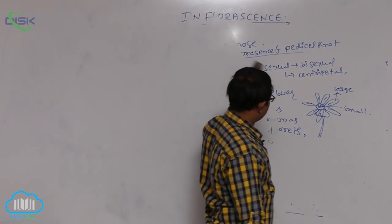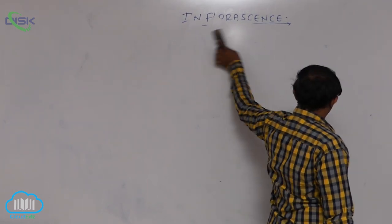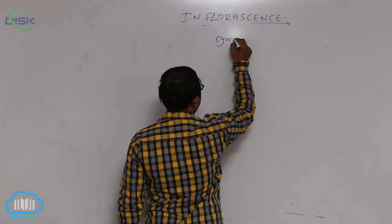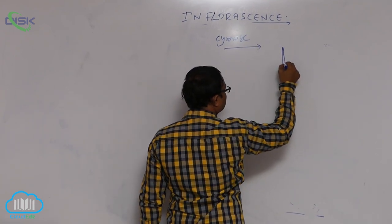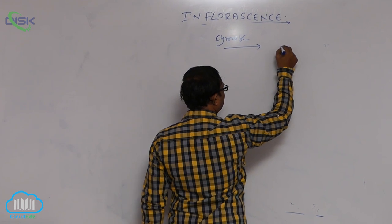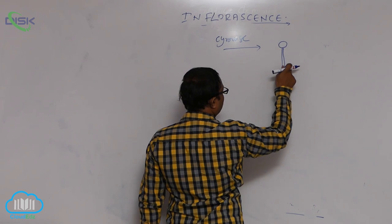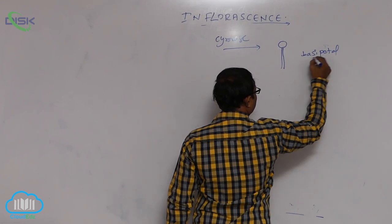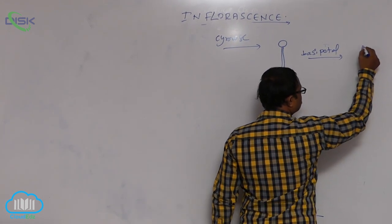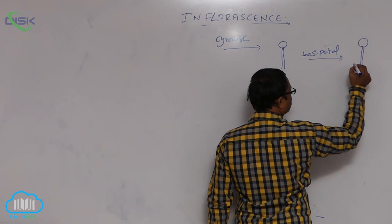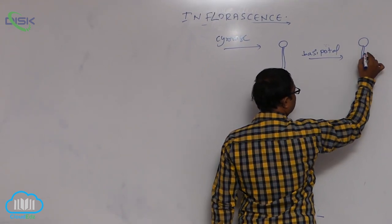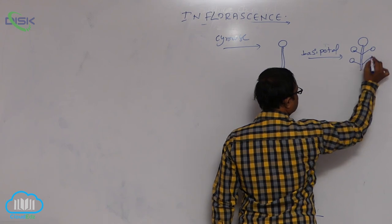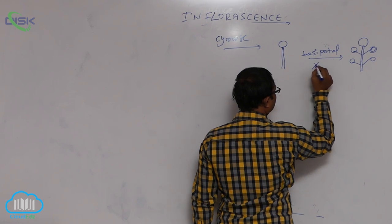Racymose inflorescence is completed. The second type is cymose inflorescence. Cymose inflorescence means: at the tip of the peduncle a flower is formed, then peduncle growth is stopped. After that, formation of flowers is arranged in basipetal arrangement. Basipetal arrangement means at the tip of the peduncle the flower is formed first — upper position has large flowers, lower side has small flowers. It is opposite to acropetal.